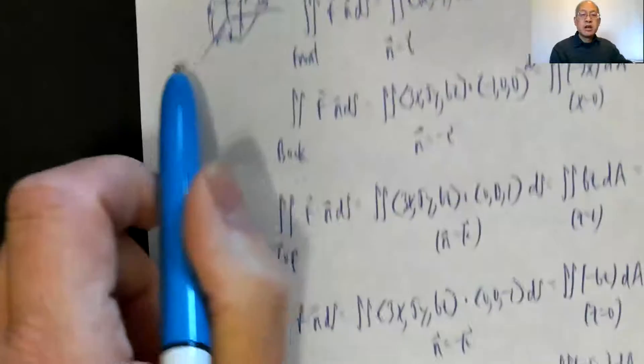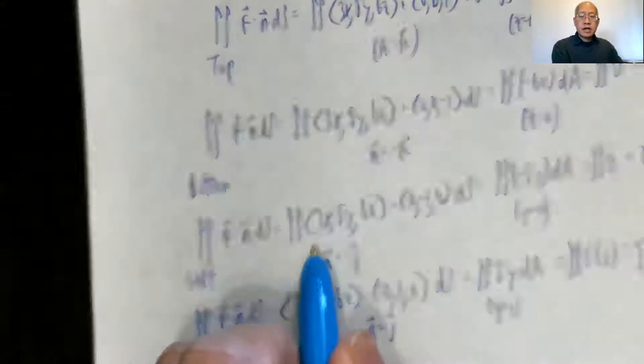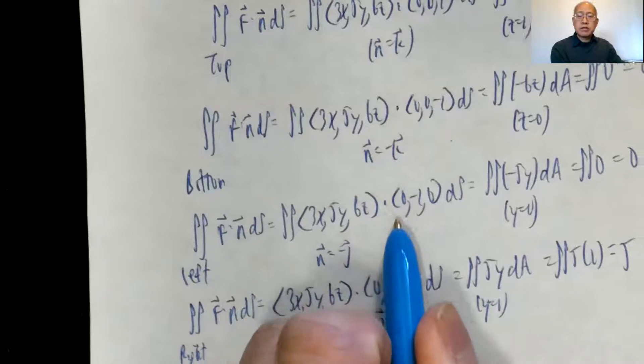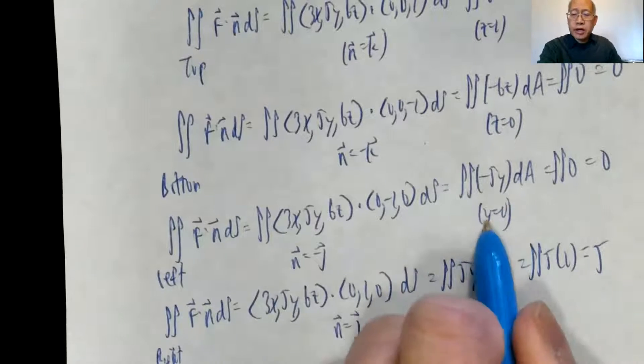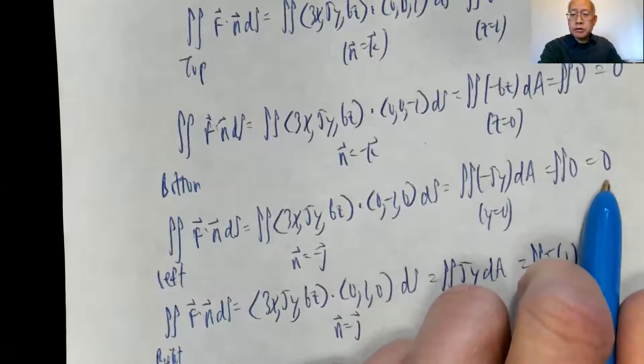Okay, then the left side: unit normal vector is negative j. So F dot n is (3x, 5y, 6z) dot (0, -1, 0), that comes out to be negative 5y dA. But y is 0, plug in integrating 0, so again I get 0.